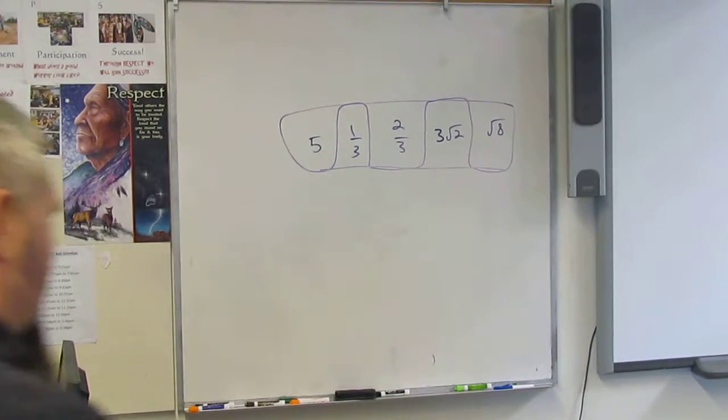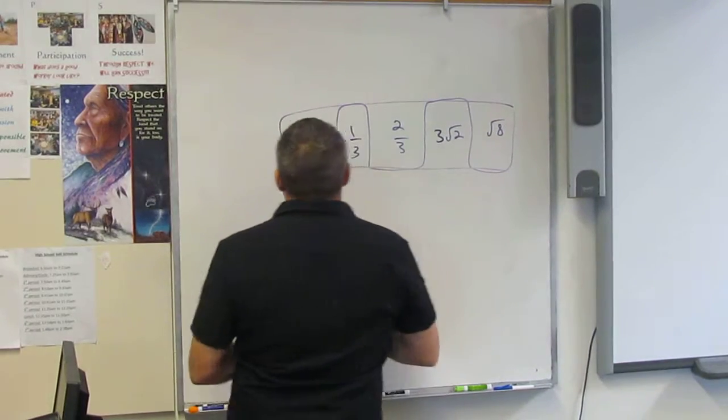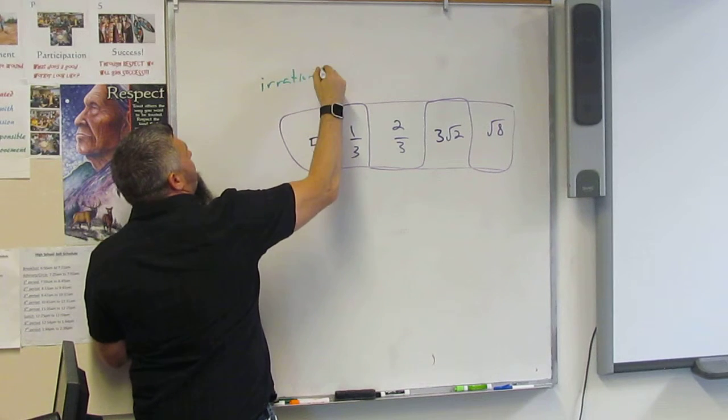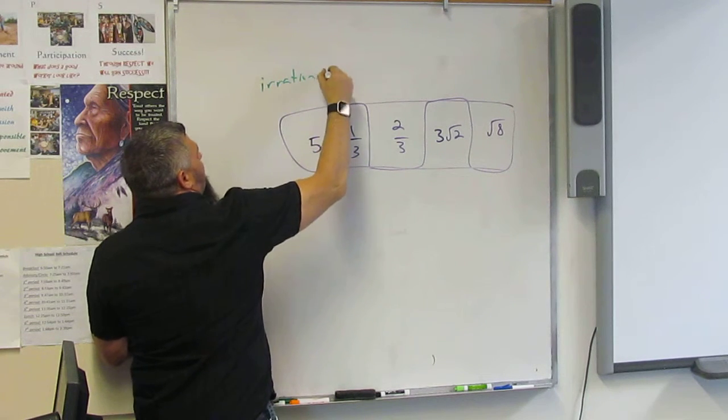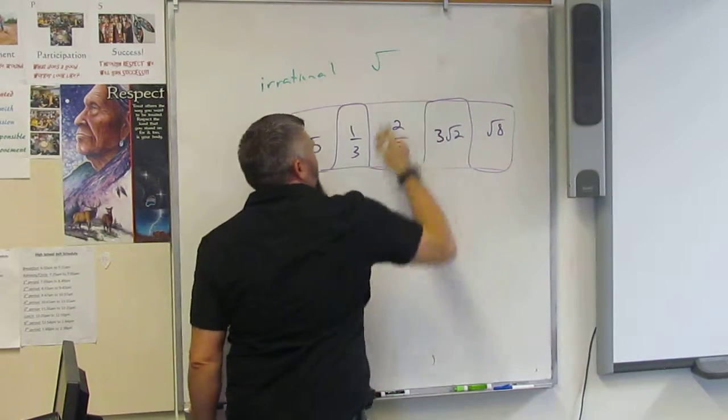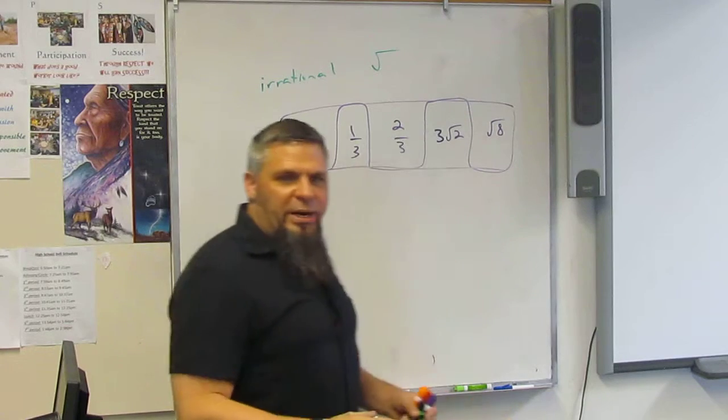Problem number four on this test is about irrational numbers. If something is irrational, then it's going to be in a square root, but it's not going to be a perfect square.